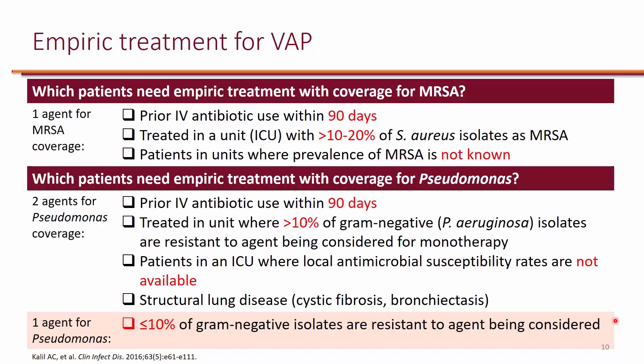The same is true for Pseudomonas when it comes to IV antibiotic treatment in the past 90 days. With Pseudomonas, it's recommended to use two agents that are active against Pseudomonas empirically, especially in ICUs where the susceptibility rate of Pseudomonas to the agents being used is less than 90 percent — in other words, the resistance rate is more than 10 percent. If the susceptibility rate on the antibiogram is not available, or the patient has structural lung disease such as cystic fibrosis, two agents are also warranted. If the susceptibility rate is above 90 percent, a single agent is sufficient.